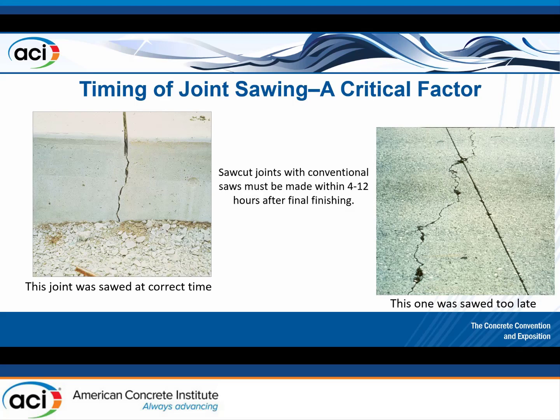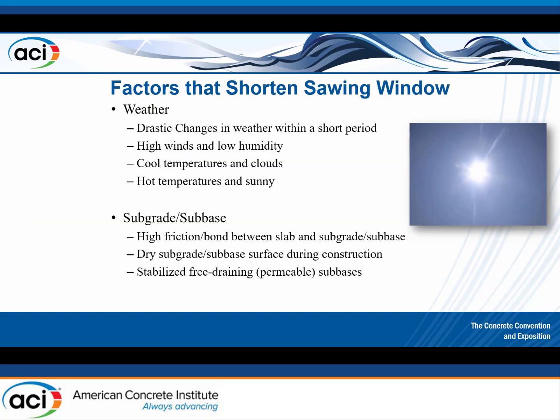This is what I was talking about — we have the saw cut here, and then we have cracking at the surface. It looks pretty and planned from the top, and then we do have cracking underneath. An owner who sees the clean saw-cut joint from the left photo is fine; an owner who sees the cracked surface in the right photo thinks their pavement has failed.